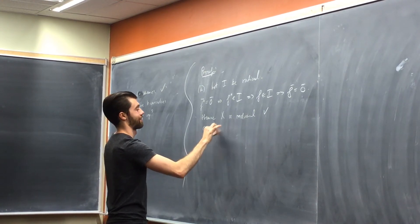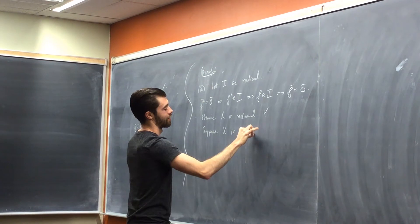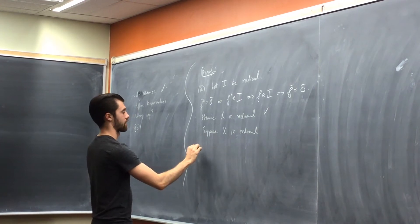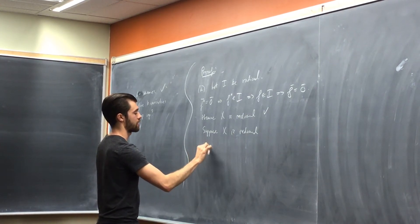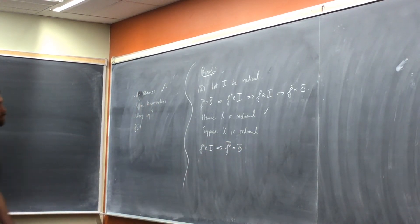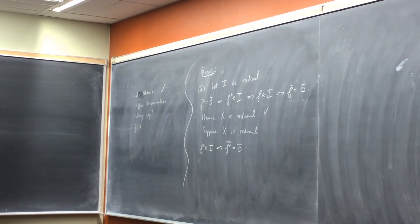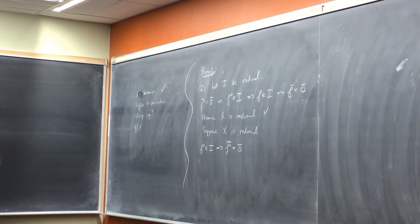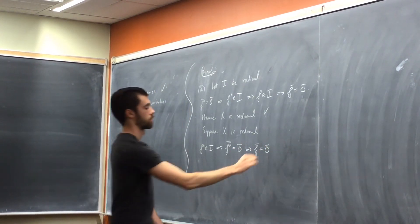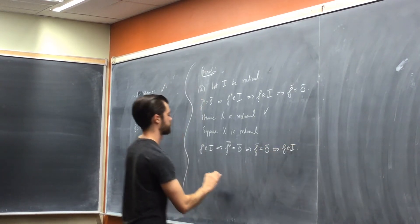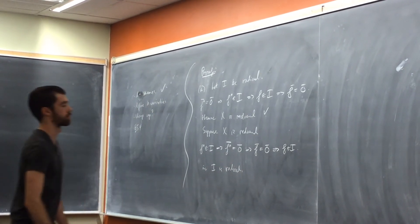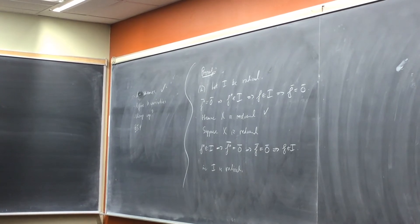Suppose X is reduced — I want to show that I has to be radical. Suppose F^n is in I. That means in the ring, F^n is 0. The scheme is reduced if and only if the ring is reduced — there are no non-zero nilpotents. So F is 0 in the ring, which means F is in I. So I is radical.